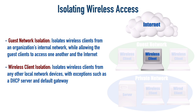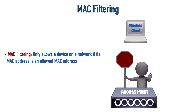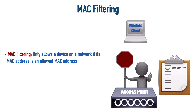One way network administrators attempt to block unauthorized clients is to check the client's MAC address — this is called MAC filtering. The access point checks whether the wireless client's MAC address is on a whitelist of approved addresses, or not on a blacklist of denied addresses, depending on which approach is used. However, MAC filtering is not considered a very strong protection, because it is trivial for somebody to alter the MAC address their computer is advertising. Unfortunately, many network administrators have a false sense of security when relying on MAC filtering, as it is easily defeated.